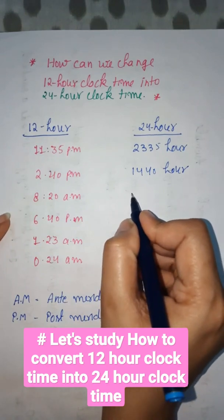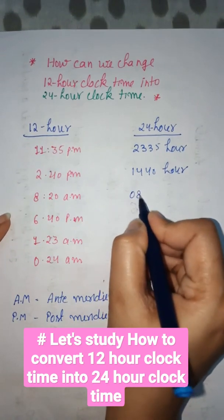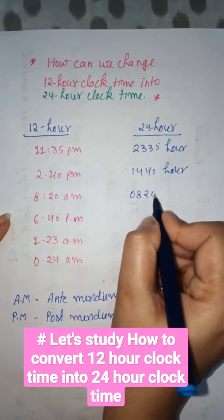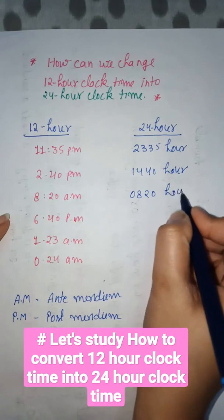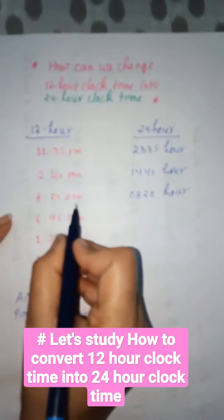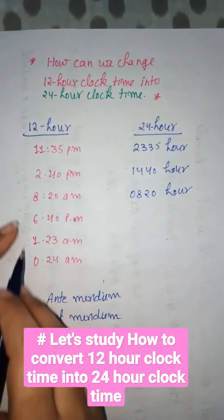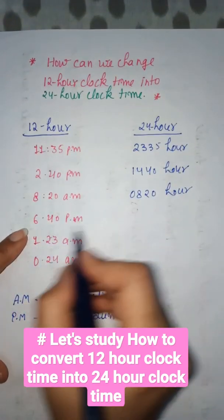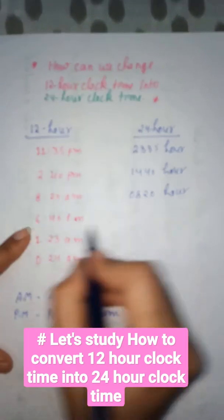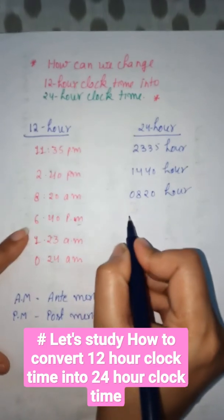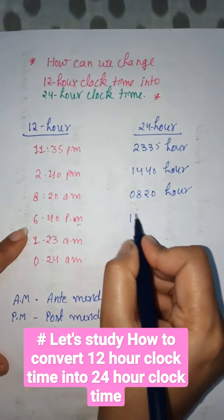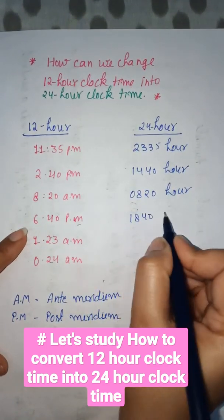8:20 AM will be 08:20 hours because it is AM, anti-meridian. 6:40 PM — don't forget PM — will be 18:40 hours.